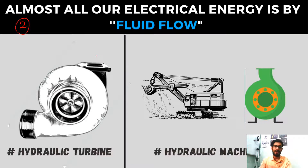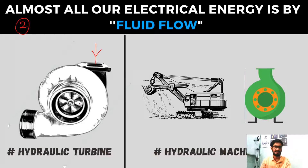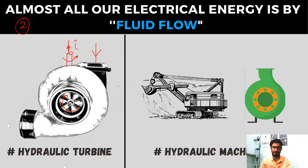Second, almost all our electrical energy is produced by fluid flow. In India we have hydraulic power stations where electrical energy is generated by fluid flow through a hydraulic turbine. The flow comes into the turbine, creates rotational motion by hitting the blades, a shaft at the center rotates, and that is coupled with a generator which ultimately gives us electrical energy in our houses.